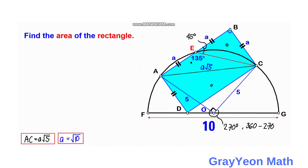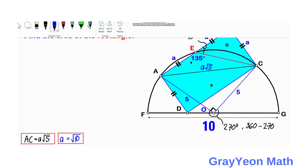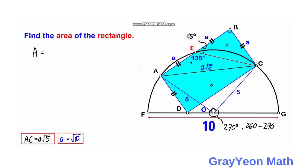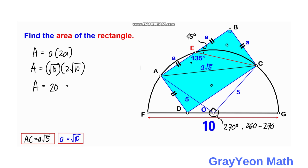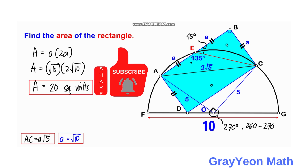Now for the final step: since a equals √10, the area of the rectangle equals length times width, which is 2a times a, equal to 2a². Substituting a² equals 10, the area equals 2 times 10, which is 20 square units. That is our answer.